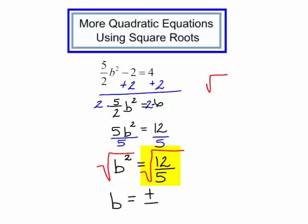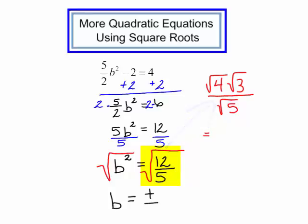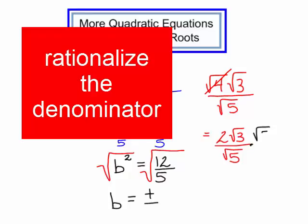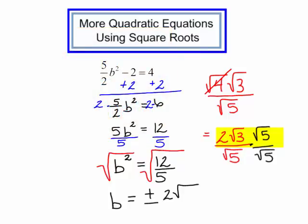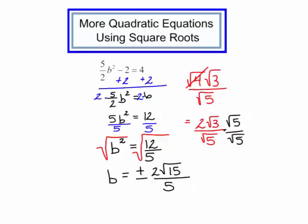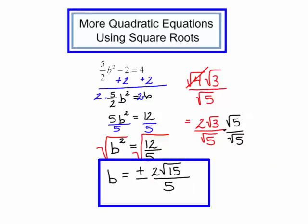The square root of 12 can be written as the square root of 4 times the square root of 3, and that is over the square root of 5. The square root of 4 is just 2. Now I need to rationalize the denominator, so I will multiply the numerator and the denominator by the square root of 5. In the numerator I will have 2 square roots of 15. In the denominator, the square root of 5 times the square root of 5 is just 5. So b equals plus or minus 2 radical 15, all of that over 5.